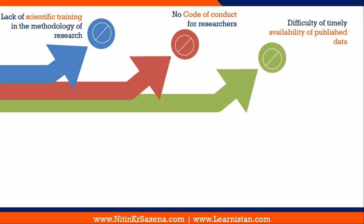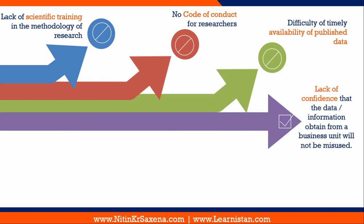Next is difficulty in the timely availability of published data. Every research has to be supported by a robust review of literature, and every result has to be supported by pre-published research. Due to the non-availability of published data, researchers find difficulty in supporting their results and arriving at a robust research design. There is also a lack of confidence in business units that when they share information with researchers, the information can be misused — partly because there is no code of conduct for researchers.